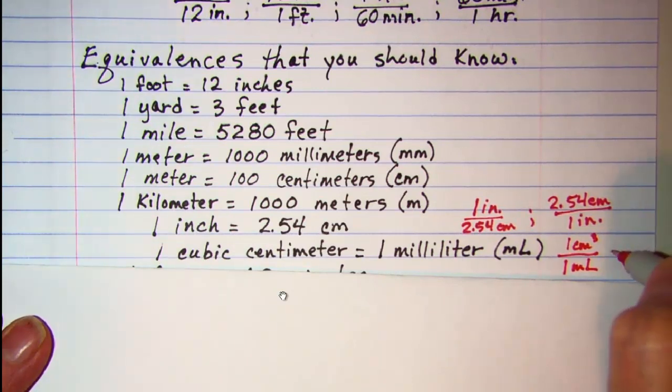And again, you can use the one cubic centimeter and one milliliter unit multiplier, or you can reverse that. They're both equal to one: one milliliter and one cubic centimeter.